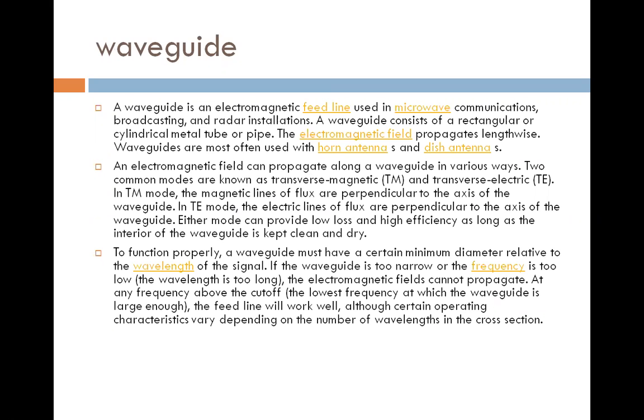What is exactly waveguide? Waveguide is electromagnetic field line used in microwave communication, broadcasting and radar installation. A waveguide consists of rectangular or cylindrical metal tube or pipe. The electromagnetic field propagates lengthwise. Waveguides are most often used in the horn antenna and dash antenna.